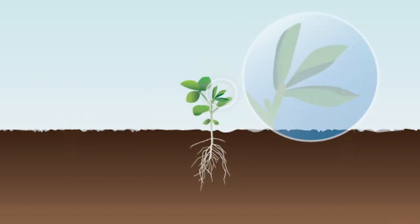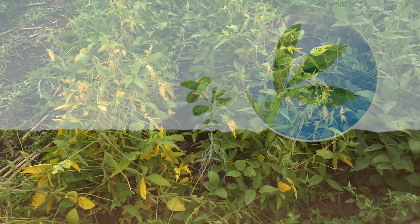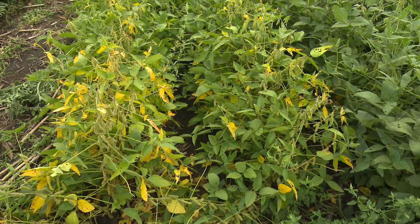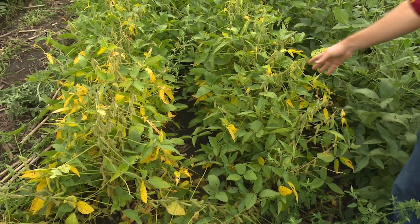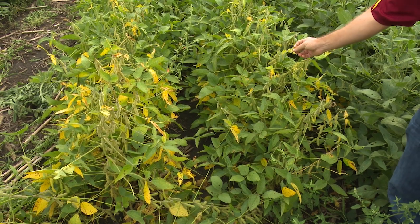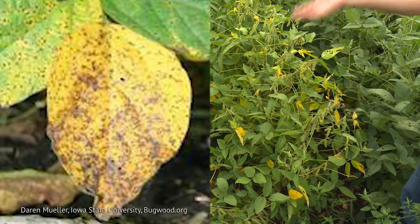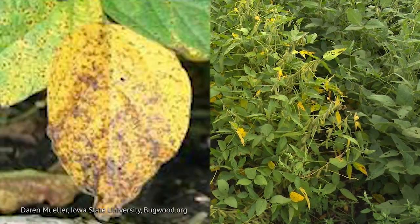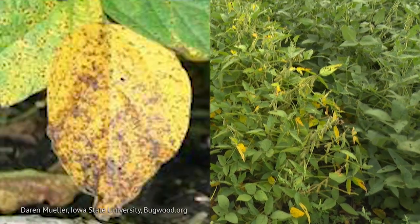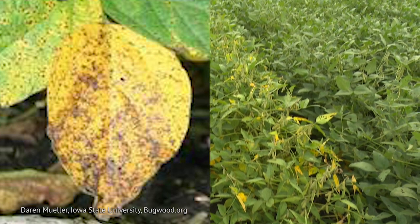Brown spots appear on the lower soybean leaves. They may move up through the plant and may cause a soybean field to appear yellow or brown. Infected leaves late in the growing season may turn rusty brown and prematurely drop from the plant.